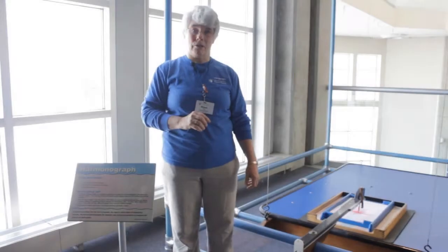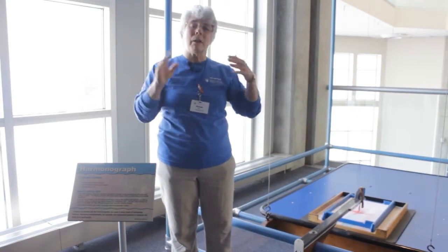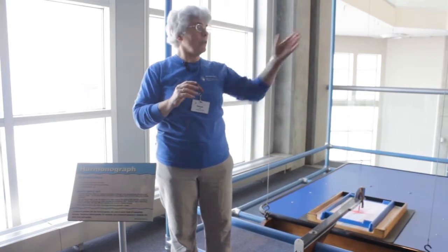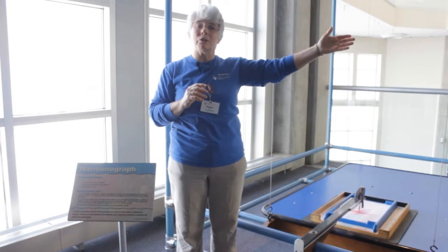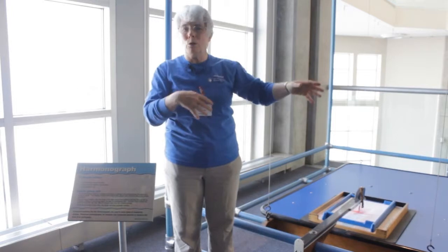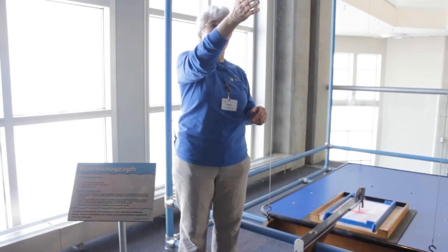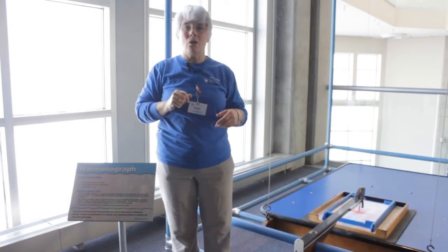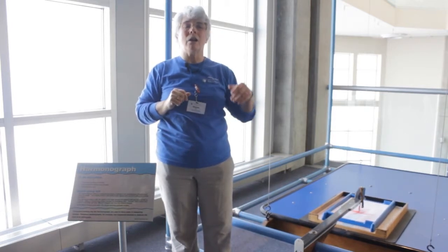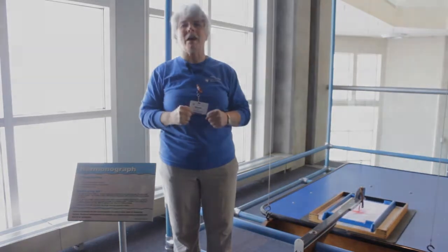When you come back to the Science Center, in addition to the harmonograph, there are other kinds of pendulum forces that you can see. We have our chaotic pendulum, which is really a compound pendulum. When you swing that, it moves all over the place. We've got the gravity well, and we've got the wave umbrella. All of these show different kinds of pendulum motion. Please come to the Science Center. You'll have a great time.